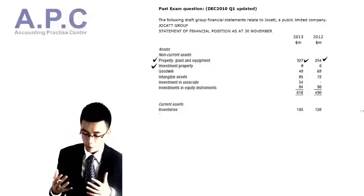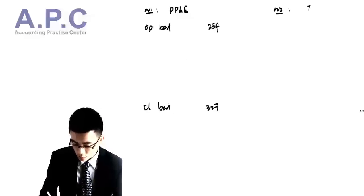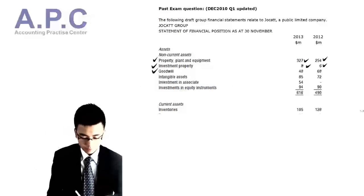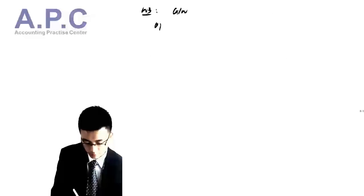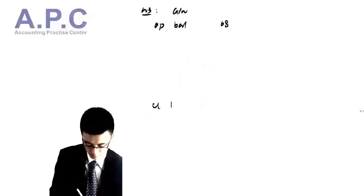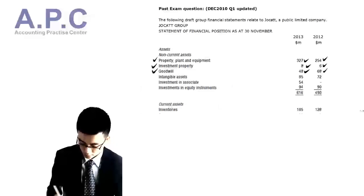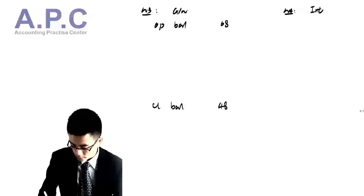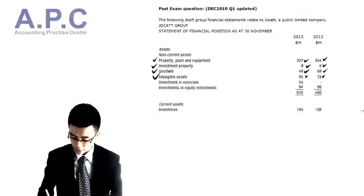We've got investment property, so working number two would be investment property, with opening balance 6 and closing balance 8. We've got goodwill, so working number three — goodwill — with opening balance 68 and closing balance 48. We've got intangible assets with opening balance 72 and closing balance 85.